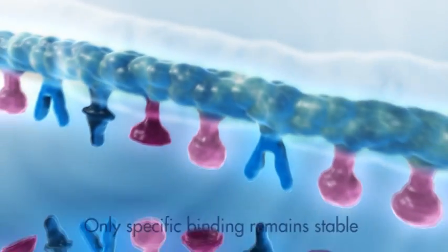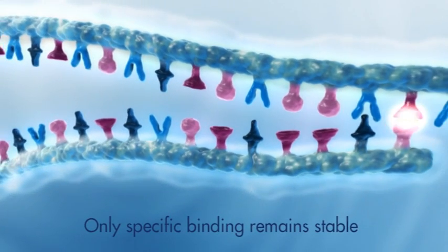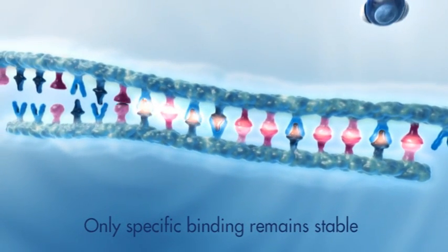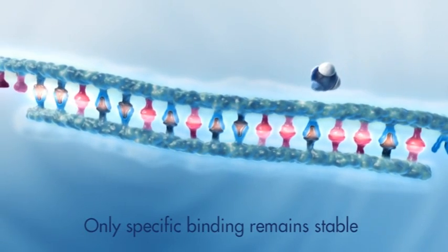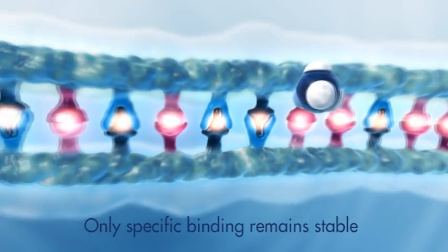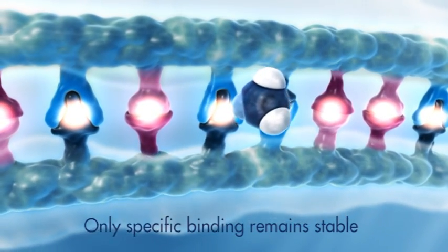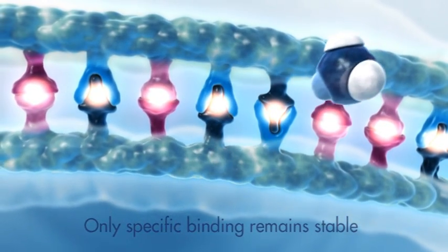Only specific binding and perfect base pair matches resist the destabilizing effects of the NH4-plus ions. Those primers with a perfect base match stay annealed and are preferentially elongated later on in the PCR process.